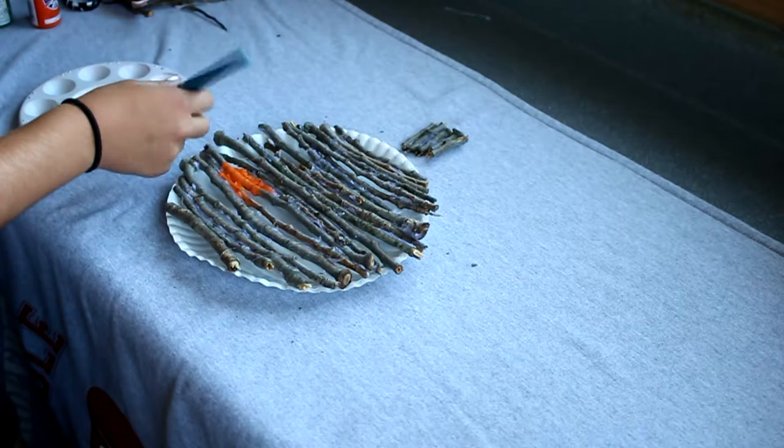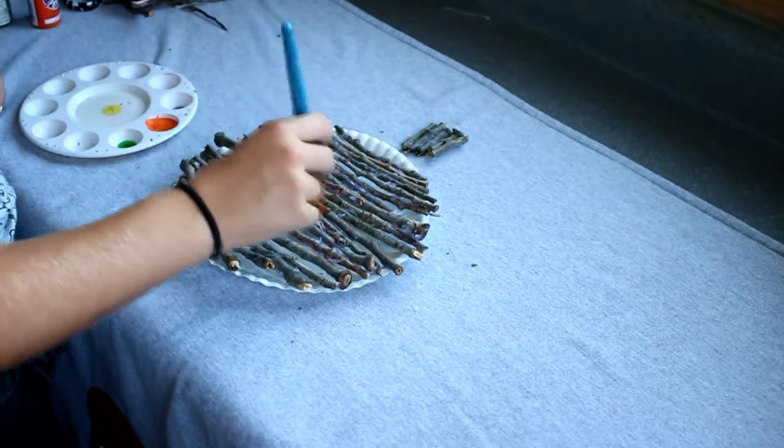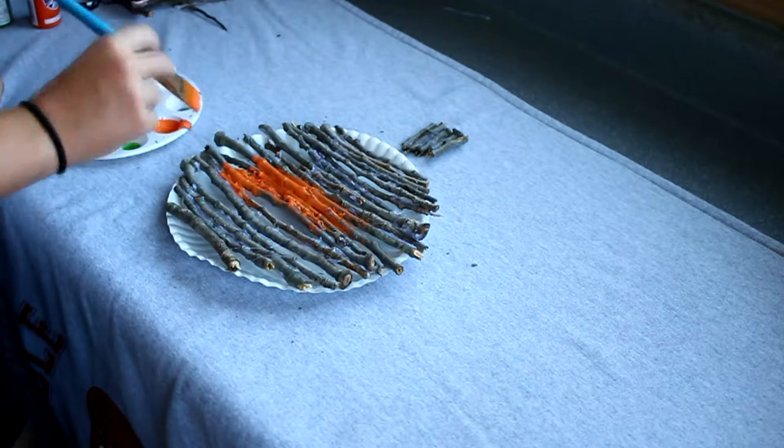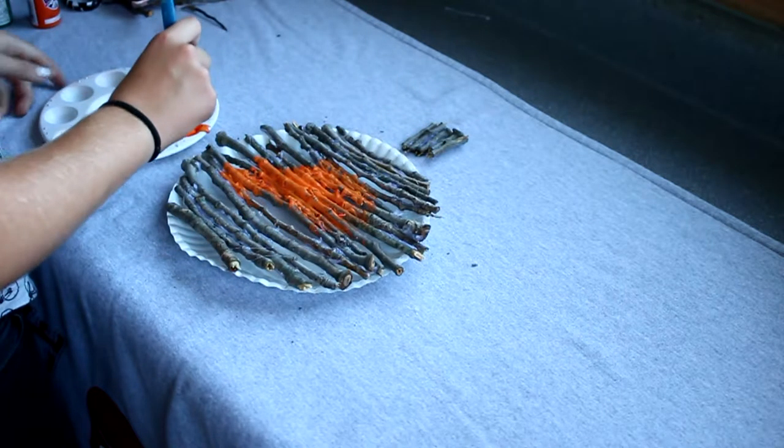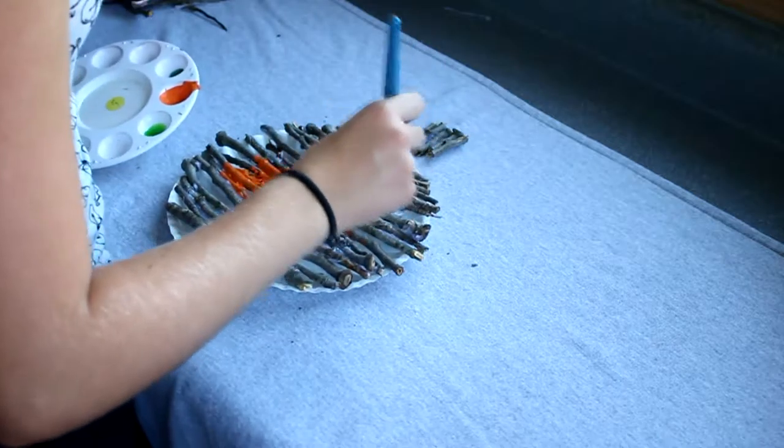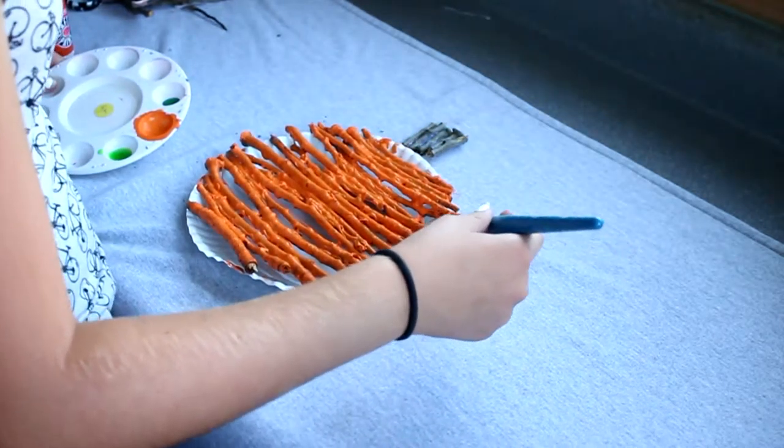After I hot glued it, I painted the base and stem of the pumpkin. I painted it orange and green, but you can paint whatever colors you want - like white and brown. I just went with the more traditional route.